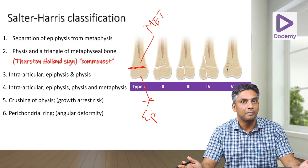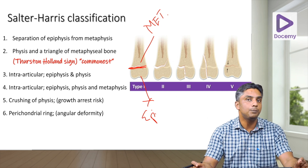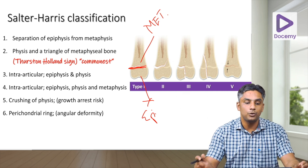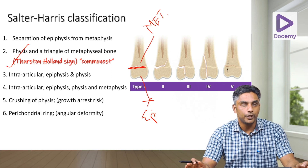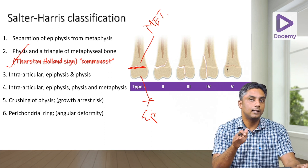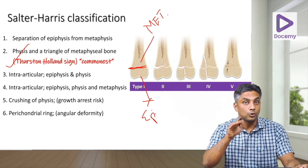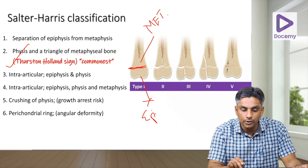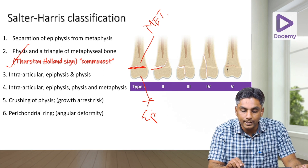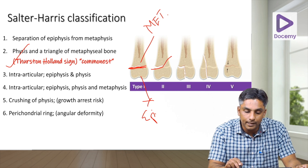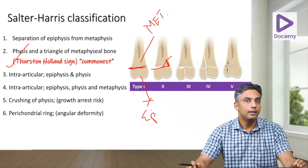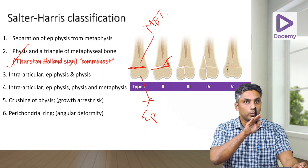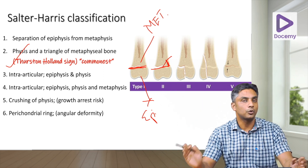In type 2 physeal injury, the buzzword is the Thurston-Holland fragment. The injury line passes through the physis but exits through the metaphysis, forming a triangular piece of metaphyseal bone — that is the Thurston-Holland fragment. So type 1 is through the physis only, whereas type 2 goes through the physis but exits through the metaphysis.